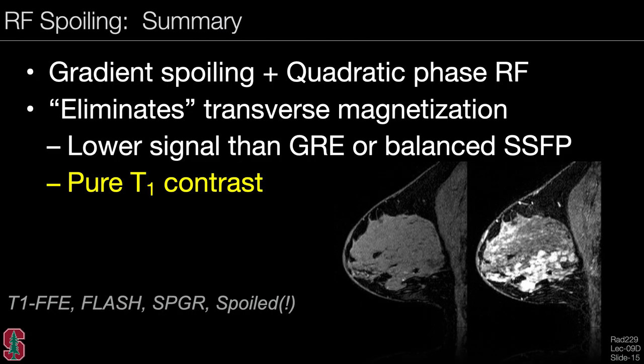To summarize RF spoiling: it uses gradient spoiling with an additional quadratic phase RF. The goal is to eliminate the transverse magnetization. This gives a lower signal than GRE or balanced SSFP since we are eliminating signal, but it gives a pure T1 contrast. The terms FLASH, SPGR, and T1FFE describe this contrast.